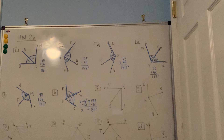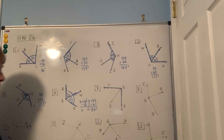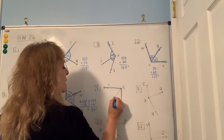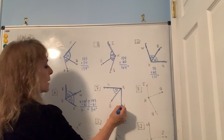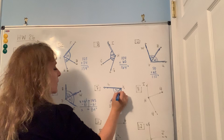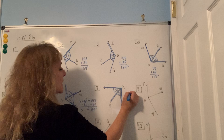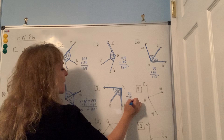Number seven: find the measure of angle JKL, which is the full angle. Angle SKL, one portion, equals 31 degrees, and angle JKS, the bottom portion, equals 52 degrees. Since they ask for the total angle, add the two parts together: 31 plus 52 gives the total number of degrees.